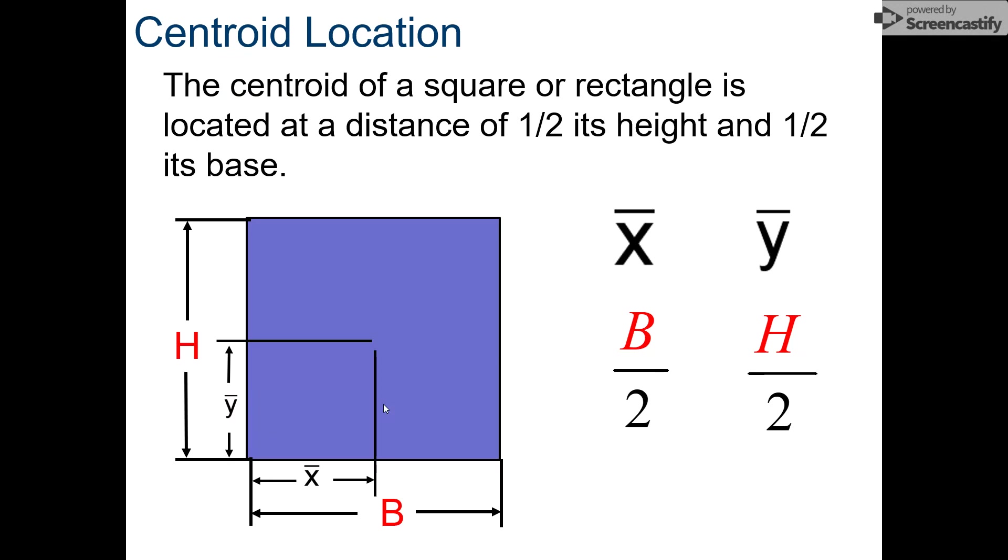When we look at squares or rectangles, our centroid location has two components: both an X and a Y component. Think of it like graphing in math. We're starting from the zero point, which is the bottom left corner. X bar, the X location of the centroid, is half of its base, so B divided by 2. Y bar, the Y location of the centroid, is at H divided by 2. It would be the same for a rectangle: half the base for the X direction, half the height for the Y direction.